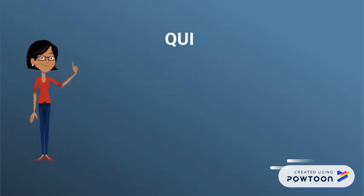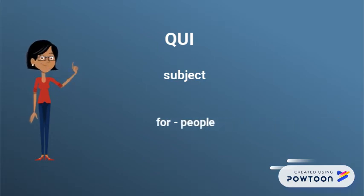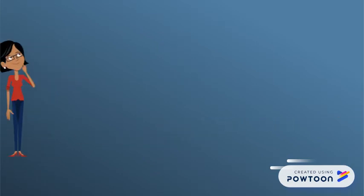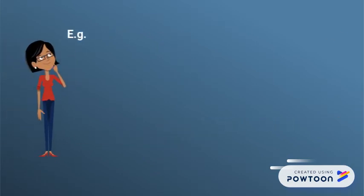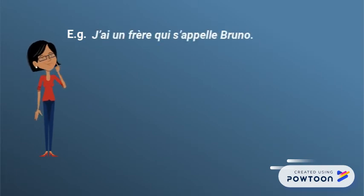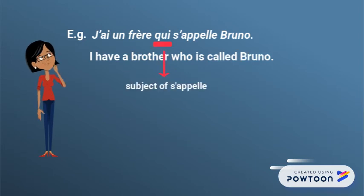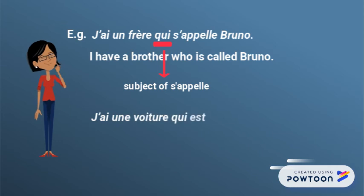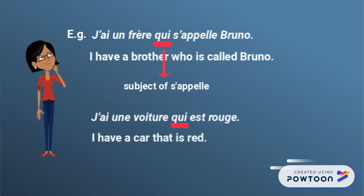Qui is used as the subject of the relative clause. It is used for both people and things. For instance: 'j'ai un frère qui s'appelle Bruno' — I have a brother who is called Bruno. Qui is the subject of the verb 's'appelle.' Another example: 'J'ai une voiture qui est rouge' — I have a car that is red. Qui is the subject of the verb 'est.'